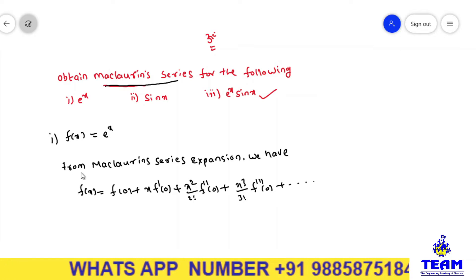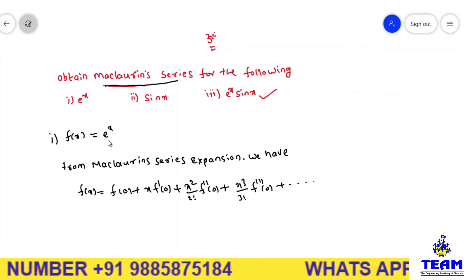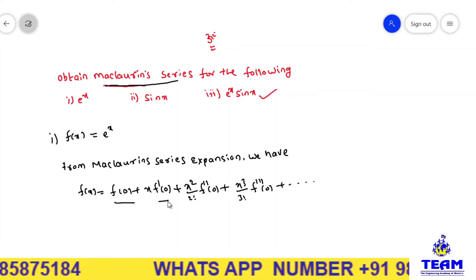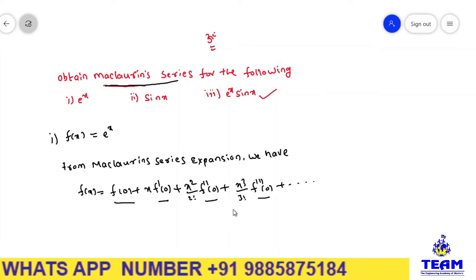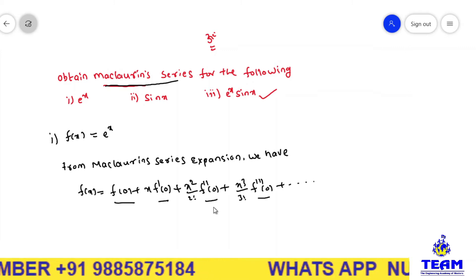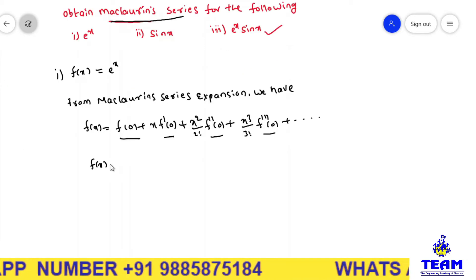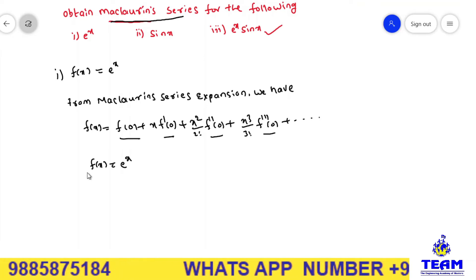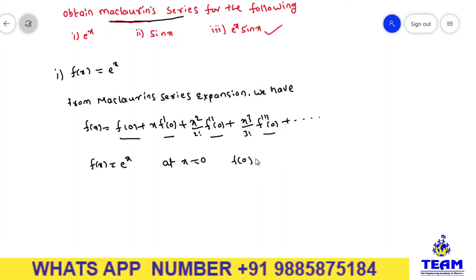To simplify this, the left side f(x) is e^x. To get the expansion we need to find f(0), f'(0), f''(0), and f'''(0). To get these values, first we have to find the first, second, and third derivatives of the given function. Now f(x) = e^x. At x = 0, f(0) = e^0 = 1.